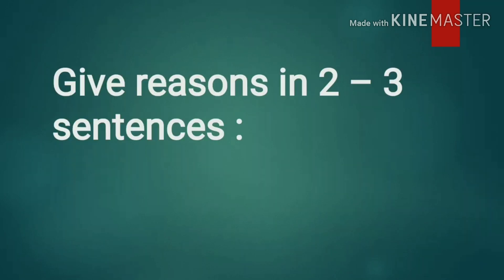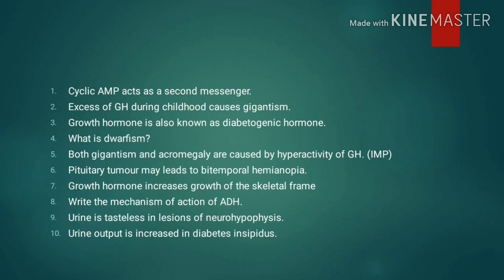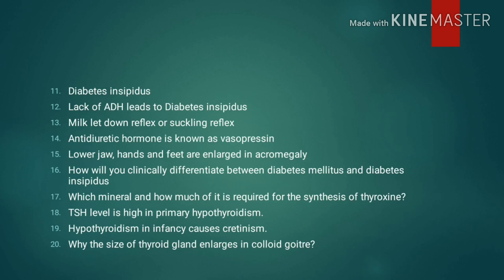Give reasons in two to three sentences: 1. Cyclic AMP acts as a second messenger. 2. Excess of growth hormone during childhood causes gigantism. 3. Growth hormone is also known as a diabetogenic hormone. 4. What is dwarfism? 5. Both gigantism and acromegaly are caused by hyperactivity of growth hormone. 6. Pituitary tumor may lead to bitemporal hemianopia. 7. Growth hormone increases growth of the skeletal frame. 8. Write the mechanism of action of ADH. 9. Urine is dilute in lesions of the neurohypophysis.